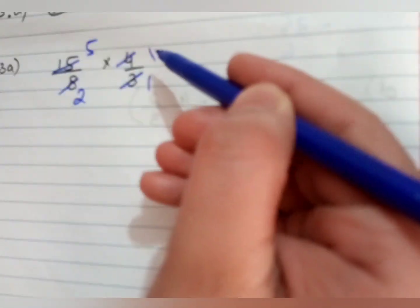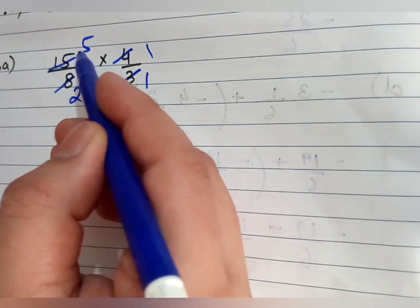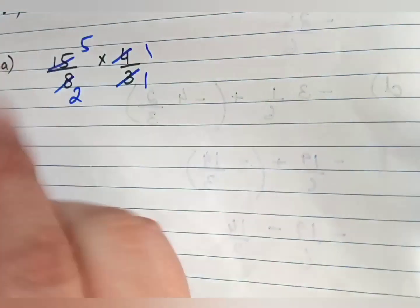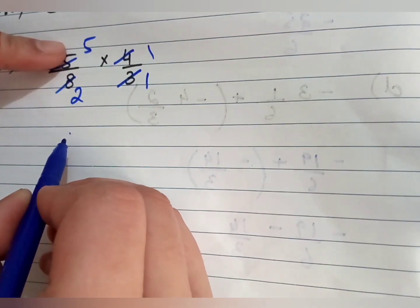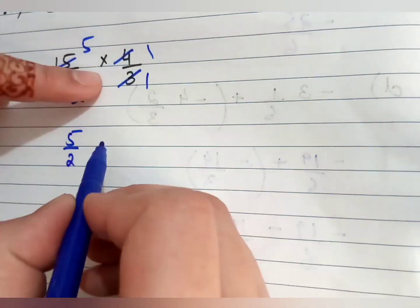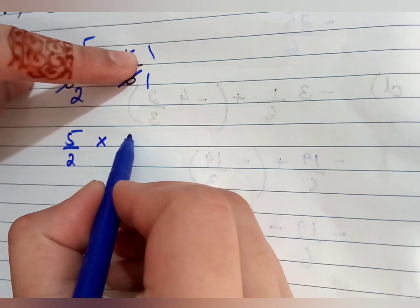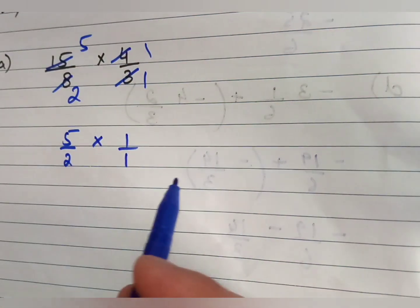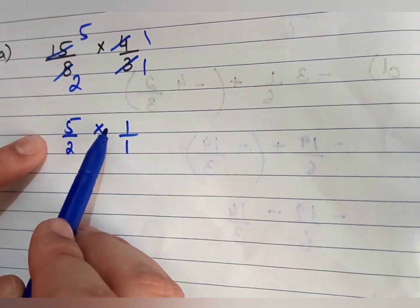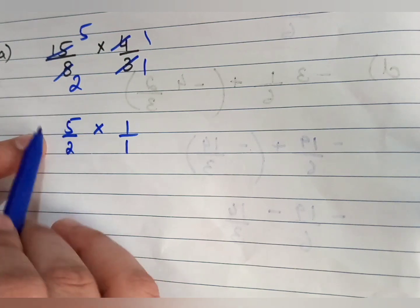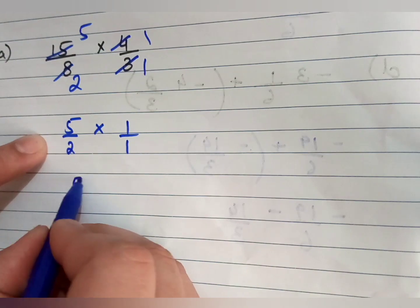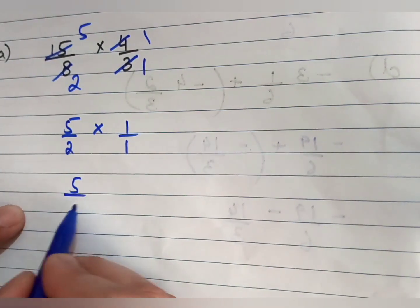Now looking at the remaining terms: we have 1 and 1, and then 5 and 2 — these can't be simplified further as they don't share a common factor. So what's left is 5 by 2 and 1 by 1. Since there's a multiplication sign, we multiply numerator by numerator: 5 times 1 equals 5, and denominator by denominator: 2 times 1 equals 2.